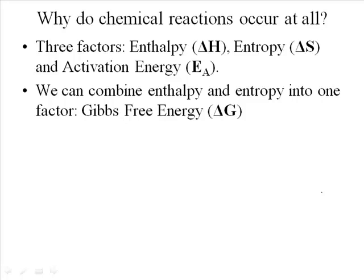The Gibbs free energy of a reaction — or the free energy as your textbook refers to it — is really just the energy of a reaction that takes into account enthalpy and entropy at the same time. The Gibbs free energy, or the delta G of a reaction, can be found simply by taking the enthalpy data (delta H) and subtracting the temperature times the entropy value (delta S). So it's really just delta H minus T times delta S. What we usually care about is whether that delta G value is positive or negative.